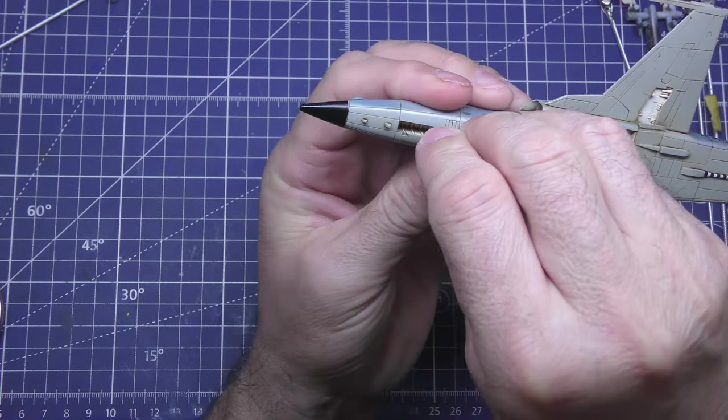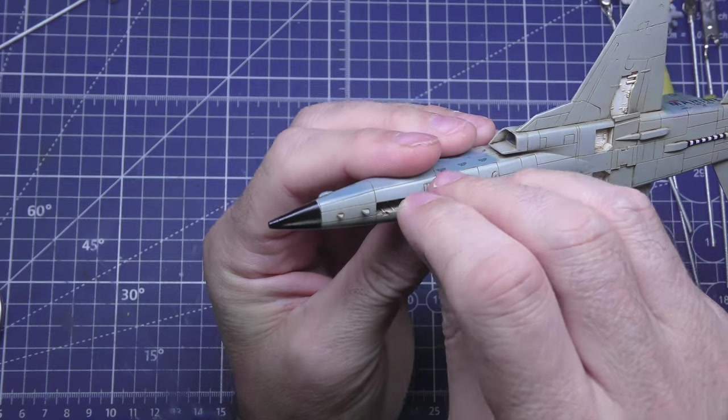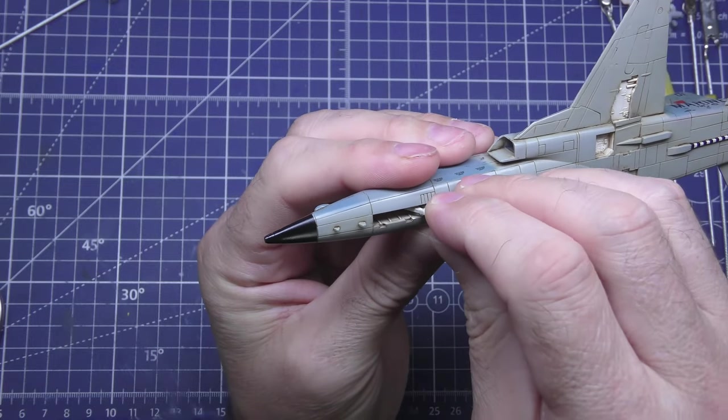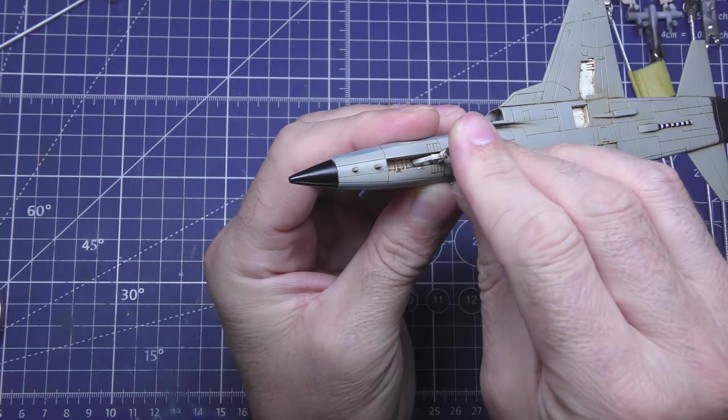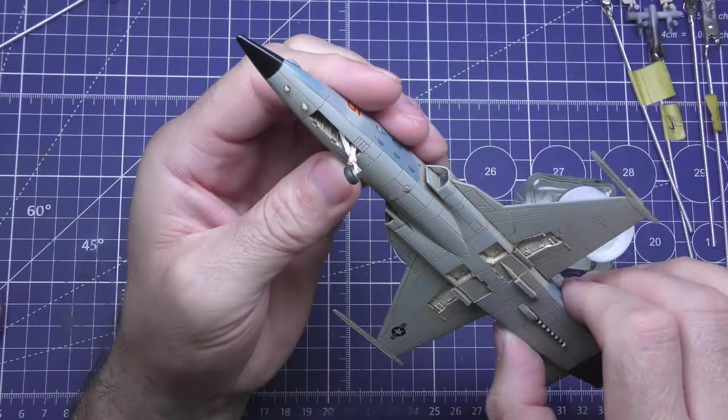The undercarriage going in now, nose wheel first. They fit in all right. They're big and fat and chunky though. That's the only thing I've got against it, but we'll talk more on that later.